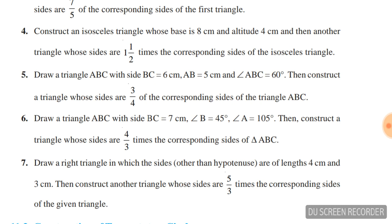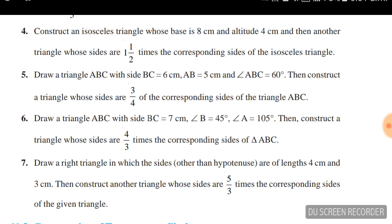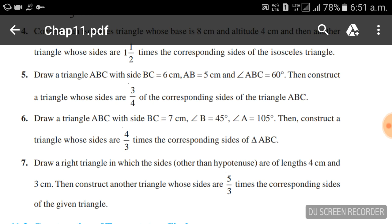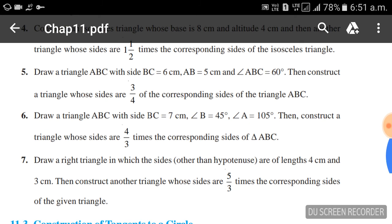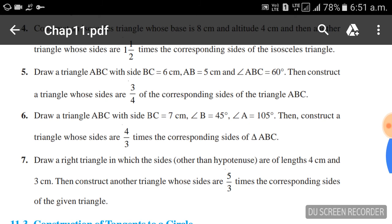Draw triangle ABC with side BC = 7 cm, angle B = 45°, angle A = 105°, then construct a triangle whose sides are four-thirds times the corresponding sides of triangle ABC.